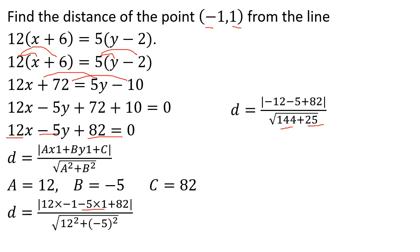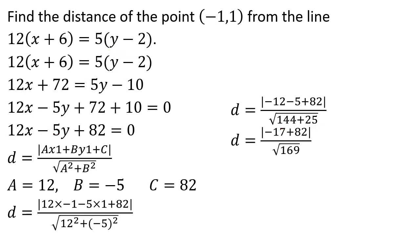Substituting: 12(-1) + (-5)(1) + 8 = -12 - 5 + 8 = -9? Wait — 12(-1) = -12, -5(1) = -5, plus 82 gives 65. Then √(12² + (-5)²) = √(144 + 25) = √169 = 13. The distance is 5 units.